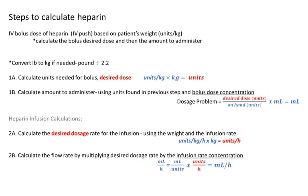The first thing you're always going to do is convert their weight. Always round to the tenths place when converting. If it's talking about a bolus, you're going to multiply the units per kilogram times the patient's kilograms. That number in units is how many units they'll need for the bolus dose. The next step is to plug that into the dosage problem using D over H times Q.